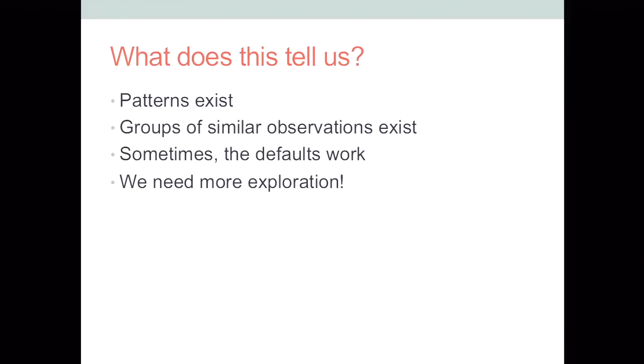So what does this tell us, though? It tells us that patterns exist, which is really useful, especially if you don't know what's going on. And also groups of similar observations exist. So there's something going on where, within our data set, things are similar to each other, which can be really useful. Sometimes the defaults work. Sometimes they don't. It really just depends on the data that you're working with. And finally, we need more exploration. There are other parameters. There are other methods of choosing k.